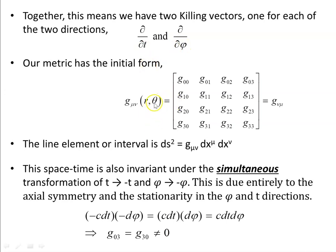A metric has a four-by-four symmetric form, and its components will be functions of r and theta — the two coordinates other than phi and t. The line element ds² is the metric contracted with each of the differentials.